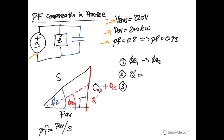Step three: once we know this new reactive power, which is based on the original power and the reactance due to the capacitor, what is the size of that capacitor to get the right value? Recall that the reactive power due to an object is the RMS current squared times the reactance.